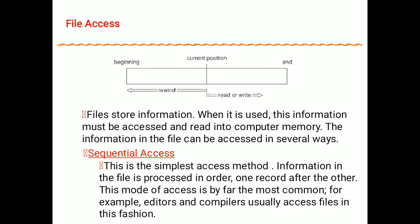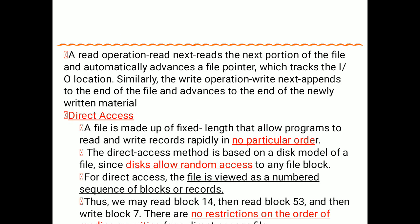While accessing memory, as shown in the diagram, there is a current position pointer. We can rewind the file — if we rewind, we reach the beginning of the file. If we read or write something we go forward, and after reading or writing, the current pointer advances to the end position. For read operations there is a 'read next' operation that reads the next portion of the file and automatically advances the file pointer.